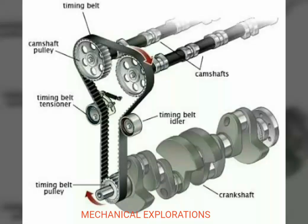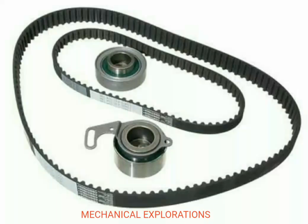In this schematic diagram you can see how the timing belt travels. Starting from the top, the timing belt comes to the camshaft pulley, then passes the timing belt tensioner and timing belt pulley — which is connected to the crankshaft — and goes up to the timing belt idler, where it joins with the camshaft.